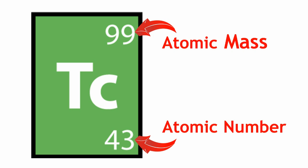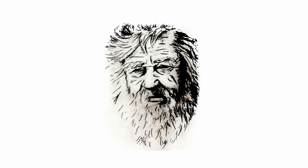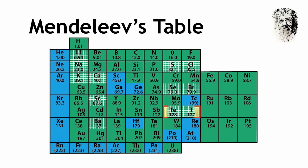Arranging the elements in order of their atomic number solves some of the problems associated with Mendeleev's table. For example, in Mendeleev's table,